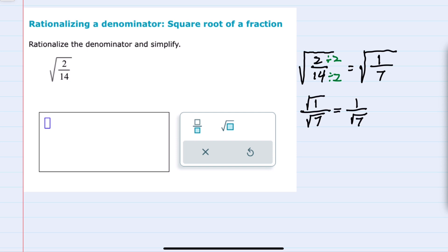We've simplified here as much as possible and it's time to finally address the fact that we have a square root in the denominator. We can fix that by multiplying the top and bottom by the same square root, the square root of 7.